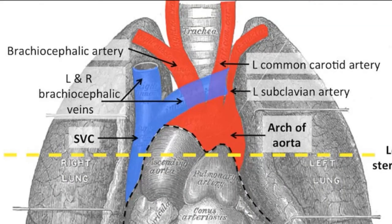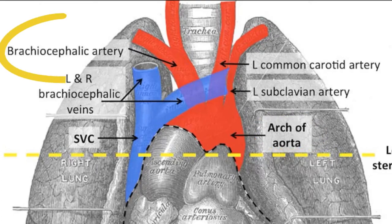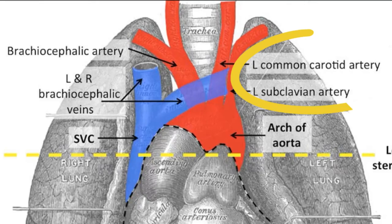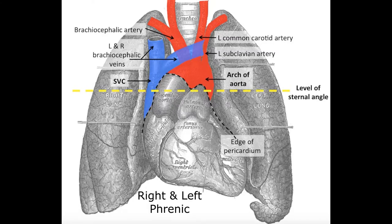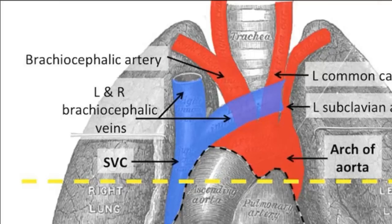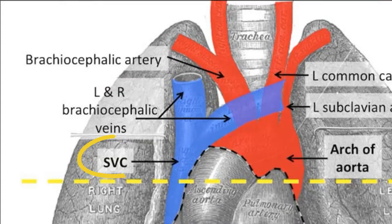Starting with the superior: with the VANs you have 4 arteries — the arch of the aorta, the brachiocephalic artery, the left common carotid, and the left subclavian arteries. Then you have 4 nerves: the right and left vagus, and the right and left phrenic. Then you have 3 veins: the right and left brachiocephalic and the superior vena cava.